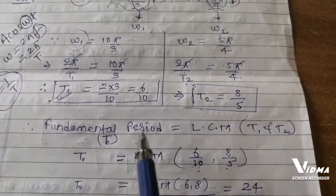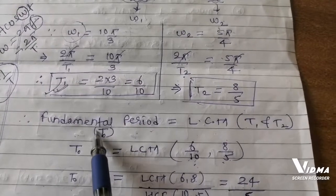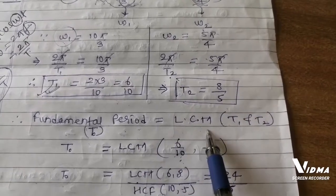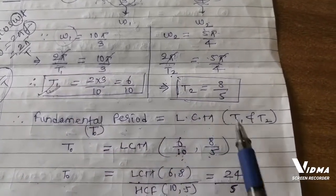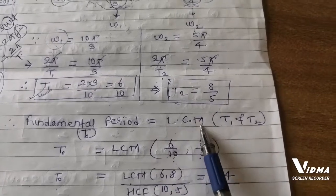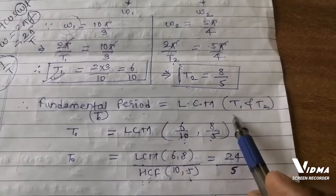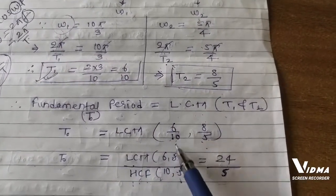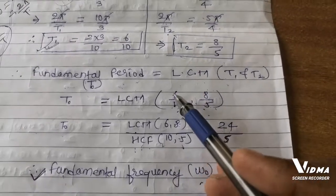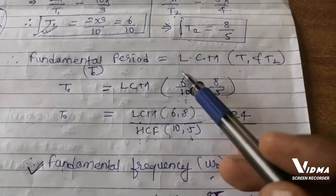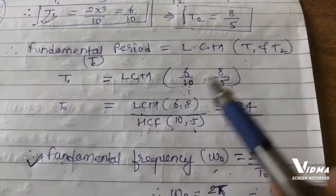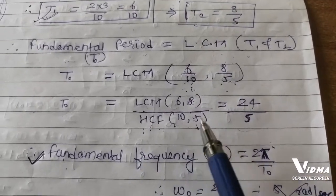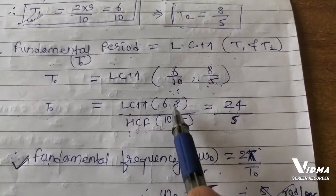Now we have to calculate the fundamental period, denoted T₀. It is calculated by taking the LCM of T₁ and T₂. So we take LCM of 6/10 and 8/5. When numbers are in the form p/q, we take the LCM of the numerators and the HCF of the denominators.